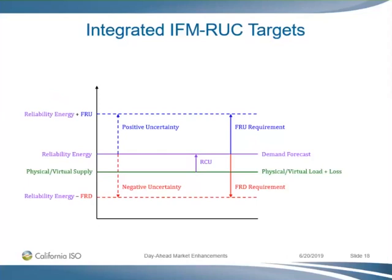If there are alternative formulations that achieve the objectives, we're all ears. We also released Excel spreadsheet models for those two approaches so you can see how practically the results are achieved and see the interactions. These are toy systems, but you can get quite a bit of insight by playing around with them. The key point is that from a bid cost they're the same, but from a clearing standpoint they're different: RCU is an hourly ramping product, and uncertainty we want to procure on a 15-minute ramp basis.